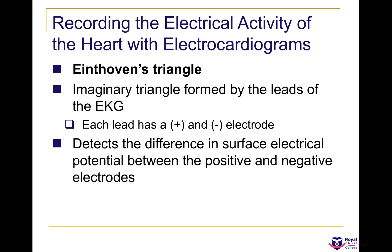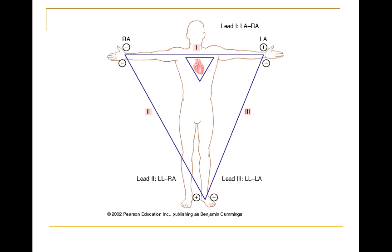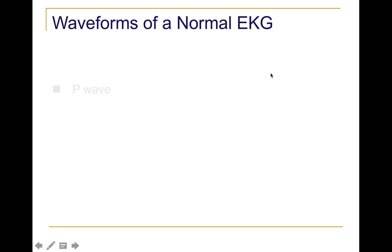There is a standard arrangement called Einthoven's triangle, which uses a simple triangle configuration to connect the basic electrode leads one through three. These detect the difference in surface electrical potential between negative and positive electrodes. Lead one goes from the left arm to the right arm, measuring electrical activity across the atria. Lead two goes from the left leg to the right arm, measuring the right ventricle and right atrium. Lead three goes from the left leg to the left arm, measuring the left ventricle and left atrium.